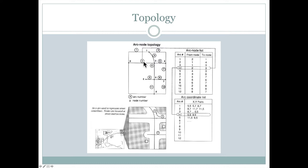For each of these roads, like number four here, stored with it we have an arc number. This is arc number four shown in the circle here. That arc starts from node two and goes to, or ends at, node three. So this line has been built from node two to three and it might represent a street.